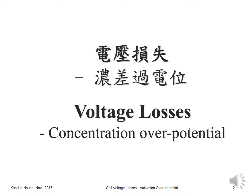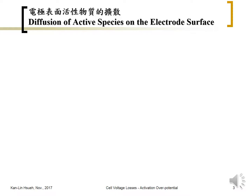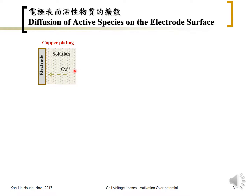This happens in all different kinds of electrochemical reactions or electrochemical systems. For instance, in copper plating, there's an electrode in a solution containing copper sulfate. When copper deposits on the electrode surface, the copper ions are consumed at the surface, so copper ions from the bulk must diffuse and replenish the depleted copper ions at the electrode surface.